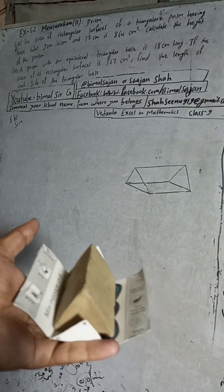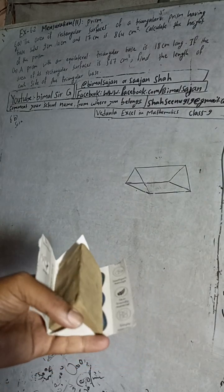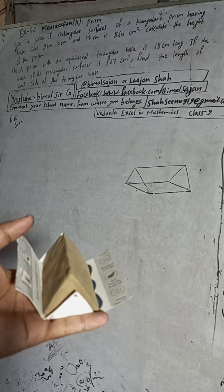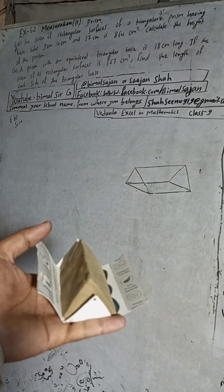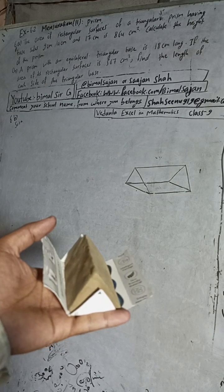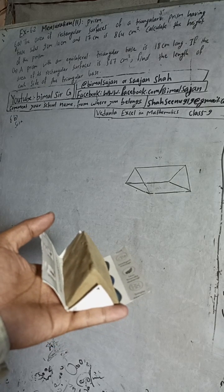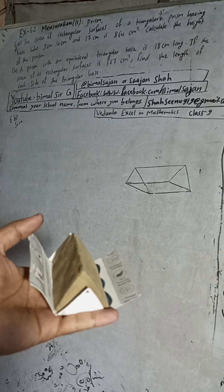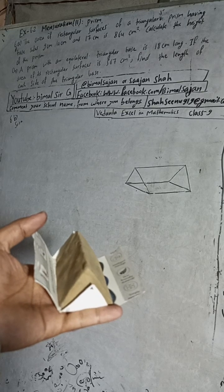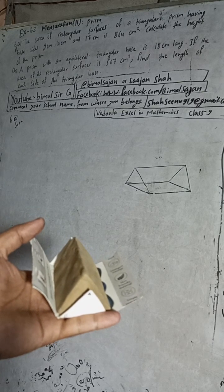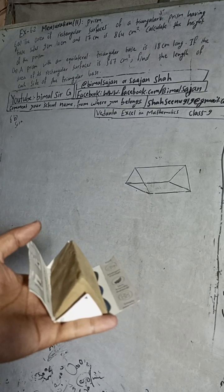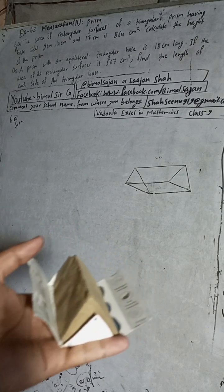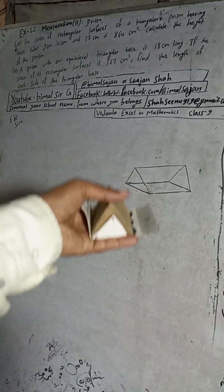Hi class 9 and 10 students, welcome back to Bimold SRG YouTube channel. This is question number 6b, exercise 6.2, mensuration second part — prism — from Vedant Excel in Mathematics class 9. The question: a prism with an equilateral triangular base is 18 cm long. If the area of its rectangular surfaces is 567 cm², find the length of each side of the triangular base.